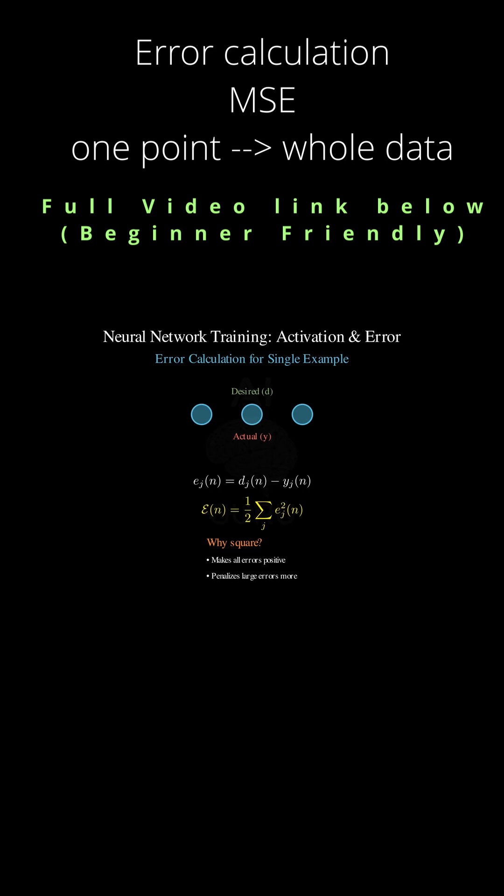Why the squared term and why the one-half? The squaring makes everything positive - we don't care if we were too high or too low, just how far off we were. It also has a nice side effect of penalizing big errors much more aggressively than small ones, making the network fix its biggest mistakes first.